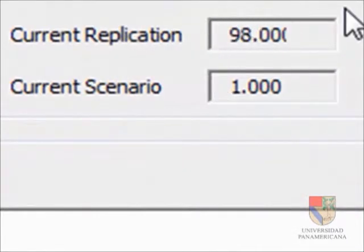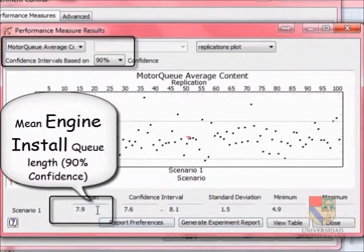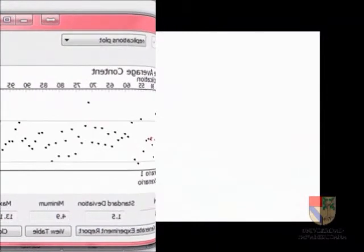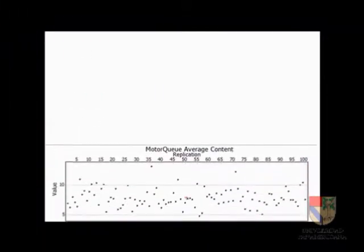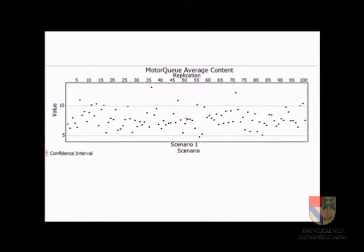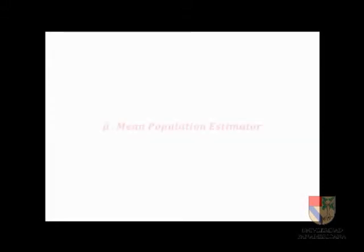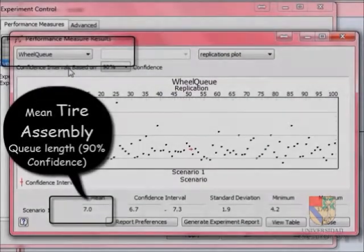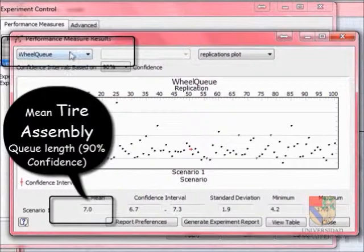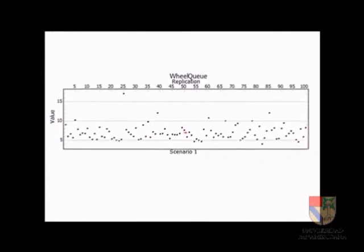Running the model, we obtained the first conclusion: the engine installation queue length is 7.9. We compare this result with the one from the original case using a dispersion plot, where each point represents the average queue length at the end of the month — at the end of 572,000 seconds. For the tire installation queue, the average is 7 cars across each of the 100 replications.